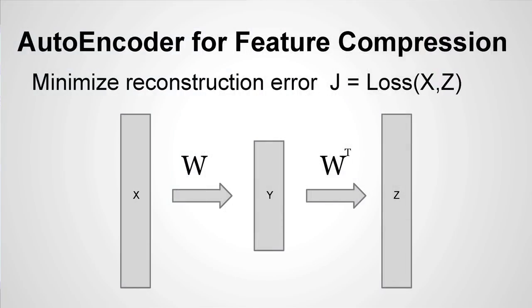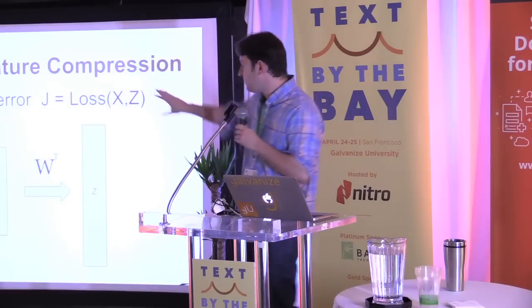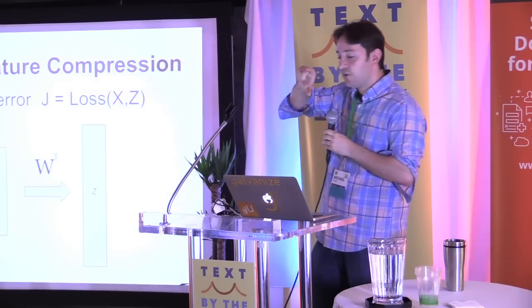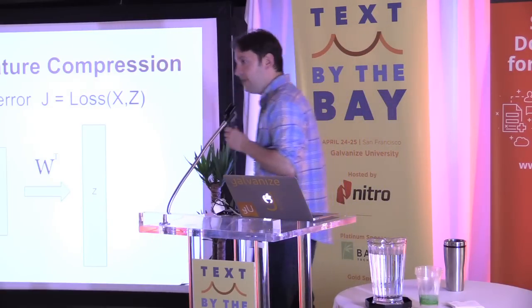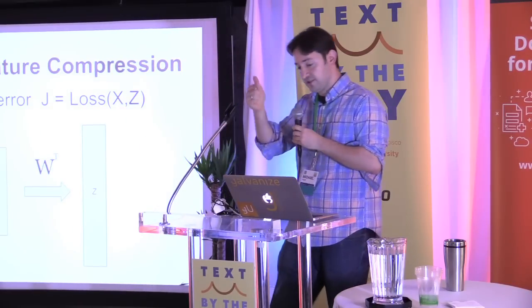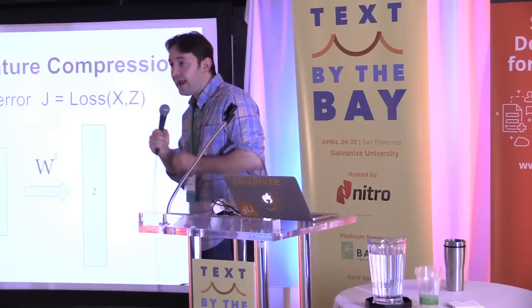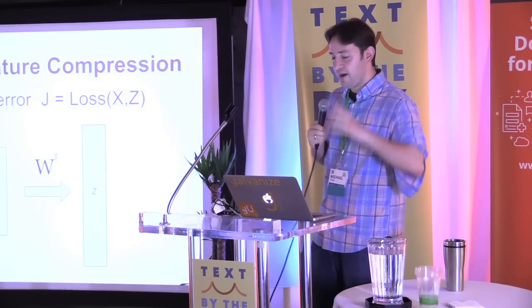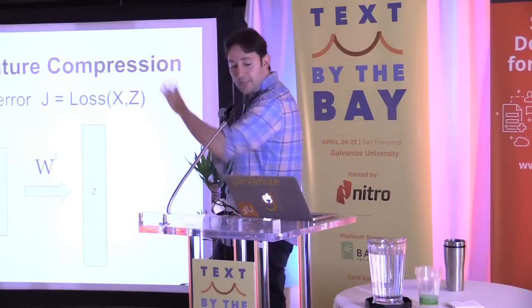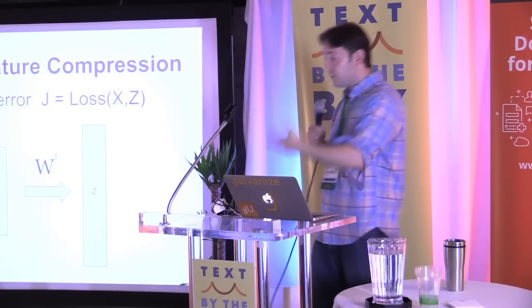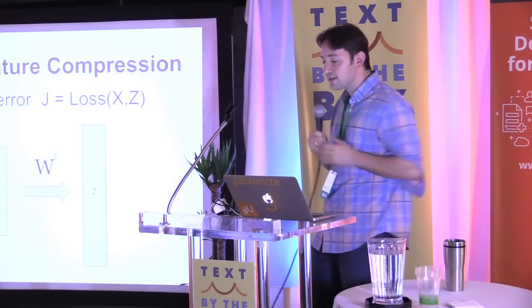The simplest kind of autoencoder has this shape. You have your input features X, you squeeze it through a keyhole. You have some sort of matrix W — it's going to be M by N where N is less than M — and that's going to squeeze it down to this next feature set Y. Then you reverse that process with W transpose to get Z. What happens is you check how much of the information you were able to squeeze through the keyhole by mapping X down to Y and then back up to Z.